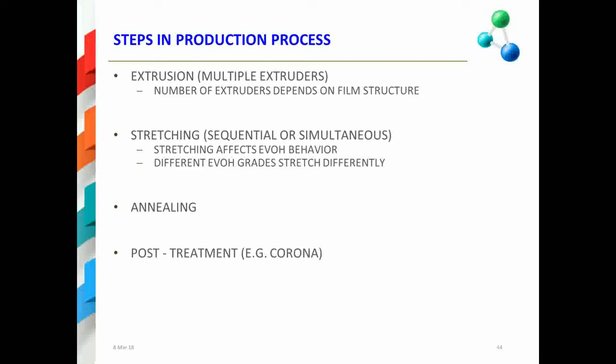The steps in the production process for oriented films with this structure are as follows. First, the various polymers are extruded using multiple extruders. The number of extruders used depends on the actual film structure being produced. After the extrusion, the film is stretched either sequentially or simultaneously. The stretching parameters used during the actual stretching process will and can affect the EVOH behavior.